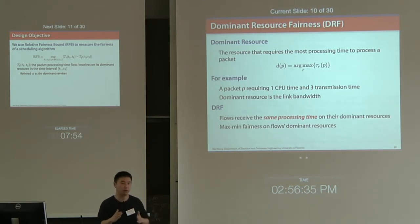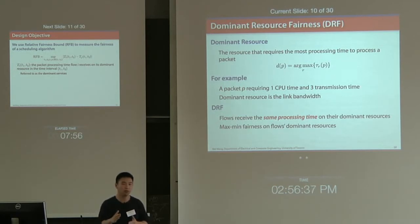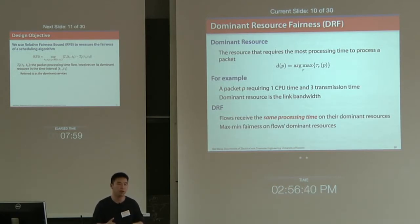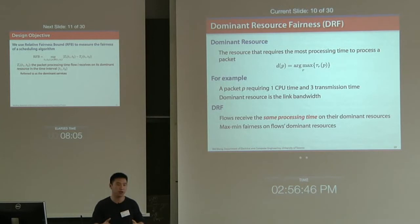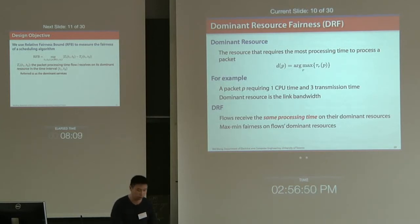If you have two traffic flows — flow one with dominant resource CPU, and flow two with dominant resource link bandwidth — then under DRF, flow one's processing time on the CPU should be roughly the same as the link transmission time allocated to flow two.